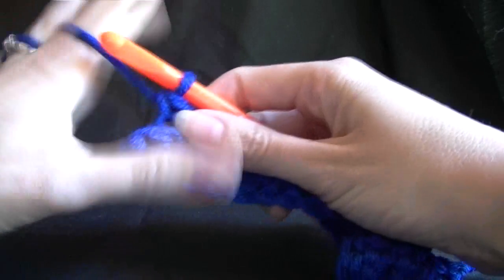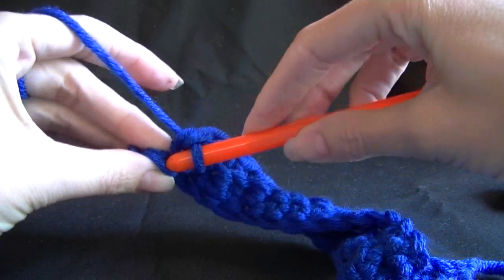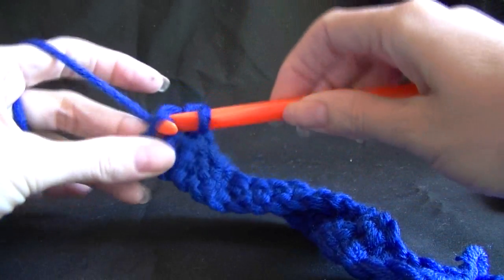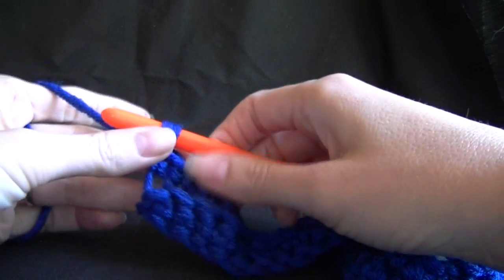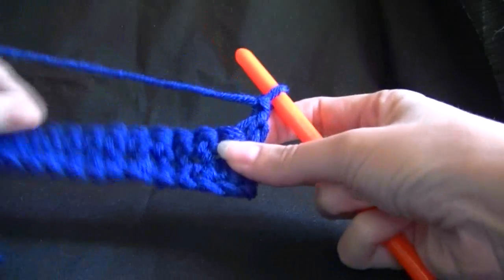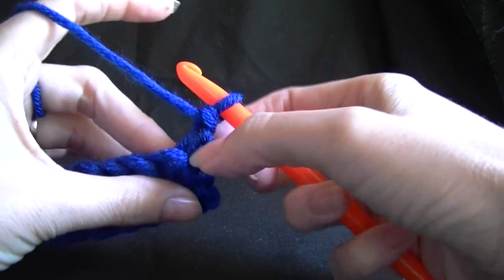Now coming up to our last stitch, and you don't want to forget to do your last stitch, because otherwise your piece won't be straight on the edges. Going into the back loop and working our single crochet, and chaining 1. Turning our work, and now we are going to be working in the back loops again.